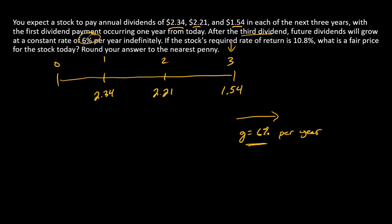We know that the price in year 3 is going to be the next dividend after that, so D4 divided by R minus G. The Gordon model is going to apply at time 3, so we can calculate D4.